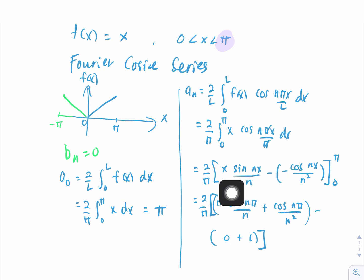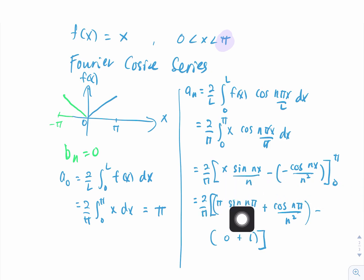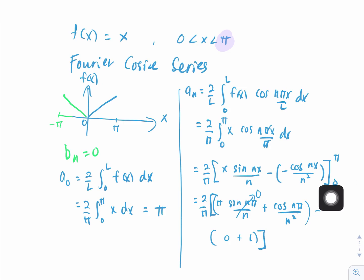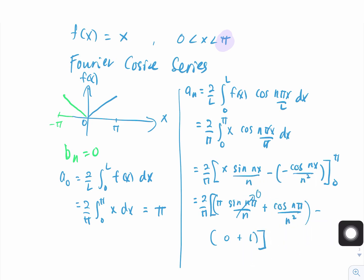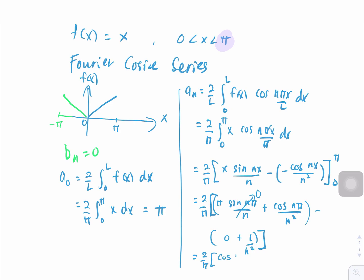After substituting the limits, we use the fact that sin(nπ) equals zero and cos(nπ) equals (−1)ⁿ. When we substitute zero into x, the sine term vanishes and cos(0) equals 1. Simplifying, noting the 1/n² factor, we get 2 over π times [cos(nπ)/n² + 1/n²], which becomes 2(cos(nπ) − 1) over n²π.